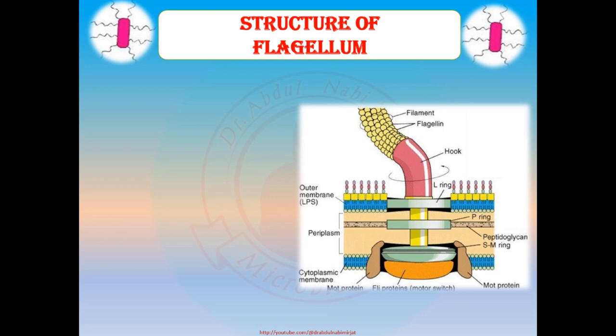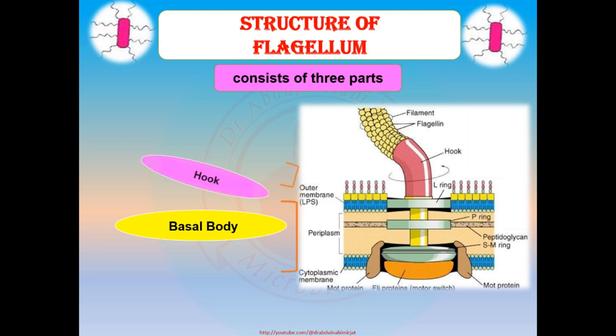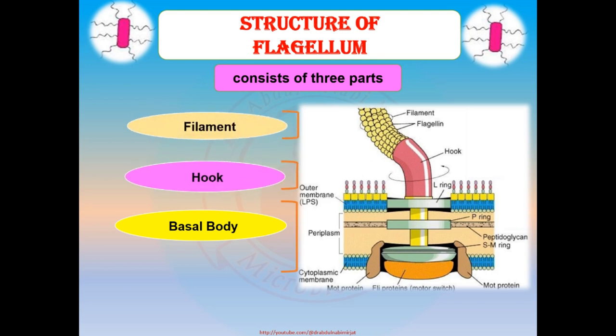Structure of a bacterial flagellum: a bacterial flagellum consists of three parts — basal body, hook, and filament. The basal body is the rotatory motor of a flagellum. It is a protein structure consisting of a small central rod surrounded by different types of rings, such as the L-ring, also called the lipopolysaccharide ring.